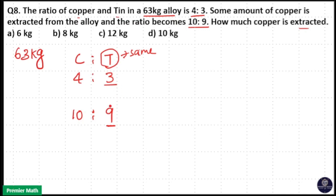So in order to make it equal I will multiply 4 to 3 with 3. That means 4 into 3 is equal to 12 to 3 into 3 is equal to 9. Here 10 to 9.